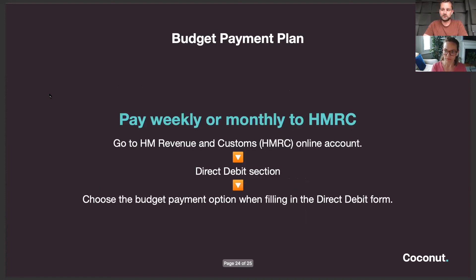If all of this is too complicated and you don't want to think about it, HMRC do have an option that not many people take up — the option to pay money directly to them using what they call the budget payment plan. You work out how much you expect to pay based on your earnings and then arrange a direct debit to go straight to HMRC every week or month. If you set up this scheme, you don't need to worry about payments on account at all, as they use these monthly payments instead.